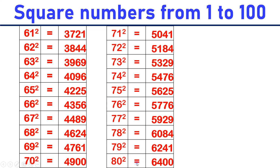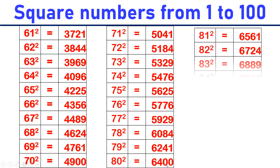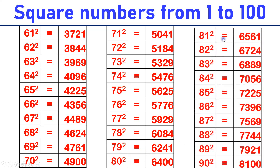80 square is equal to 6400. 81 square is equal to 6561. 82 square is equal to 6724. 83 square is equal to 6889. 84 square is equal to 7056.